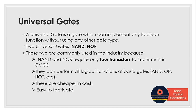And why do we use them commonly in the industry? Because NAND and NOR require only four transistors to implement in CMOS devices, whereas other logic gates such as AND, OR, and NOT require more number of transistors. So that's one of the advantages of using NAND and NOR as universal gates.